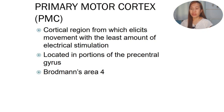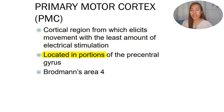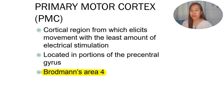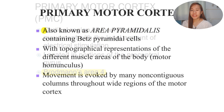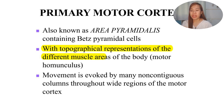The primary motor cortex is the cortical region from which movement can be elicited with the least amount of electrical stimulation. They are located in portions of the precentral gyrus, in Brodmann's area 4. The primary motor cortex is also known as the area pyramidalis, which contains Betz's pyramidal cells - the types of cells located in the primary motor cortex - with topographical representations of the different muscle areas of the body, also known as the motor homunculus.